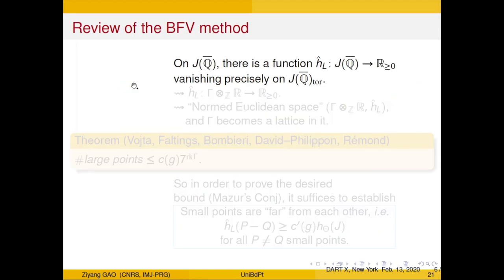Let me sketch the proof. As our proof is based on Vojta's proof, let me quickly recall some main ingredients. First of all, we study everything on the Jacobian. On J(Q-bar) there is a height function called the Néron-Tate height function. It is defined as follows: take any symmetric ample line bundle on J, define the classical height function, take a limit process, and it becomes an actual function — not just a class of functions, but an actual function. This function goes from the algebraic points of J to non-negative real numbers and vanishes precisely on the torsion points.